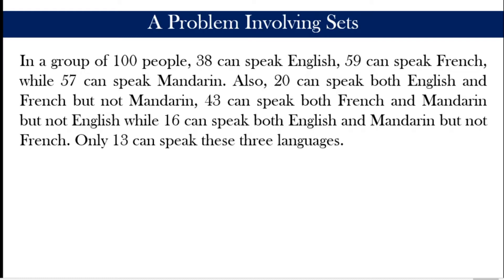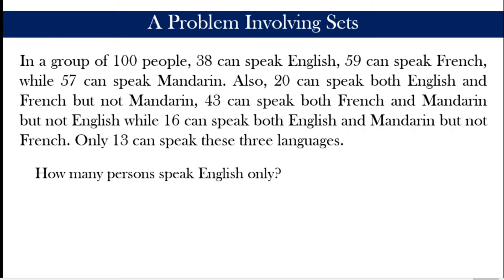Here is the problem we are going to solve. In a group of 100 people, 38 can speak English, 59 can speak French, while 57 can speak Mandarin. Also, 20 can speak both English and French but not Mandarin, 43 can speak both French and Mandarin but not English, while 16 can speak both English and Mandarin but not French. Only 13 can speak all three languages.